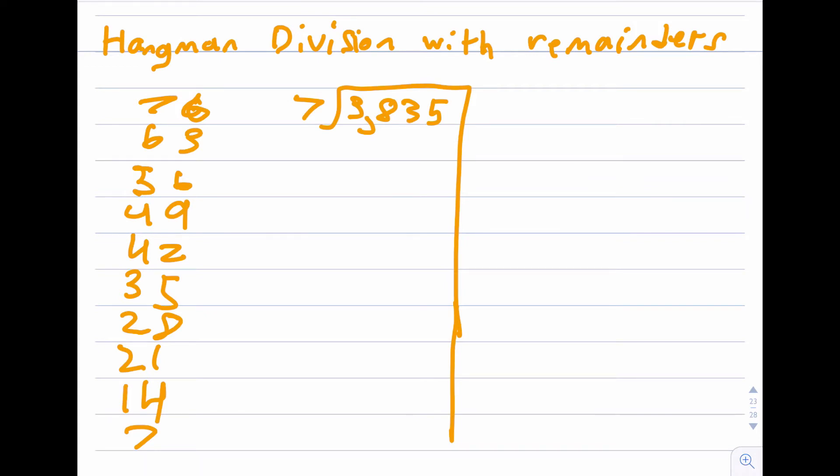Do you see a multiple of 7? I do. I see 500. 7 times y equals 3,500. Yep, that's right. 7 times 500 equals 3,500. So 3,835 minus 3,500 equals 335.